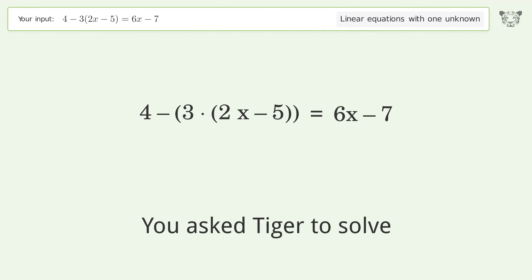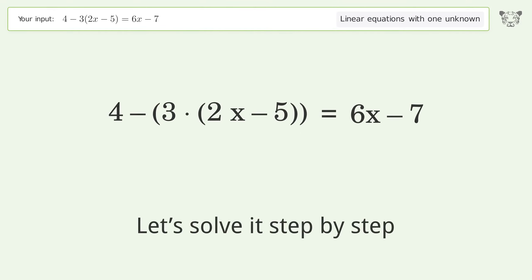You asked Tiger to solve this problem which deals with linear equations with one unknown. The final result is x equals 13 over 6. Let's solve it step by step.